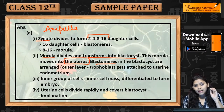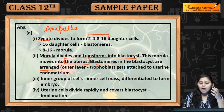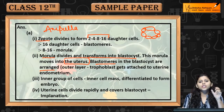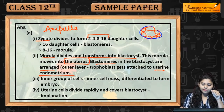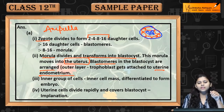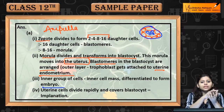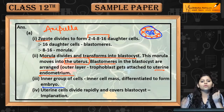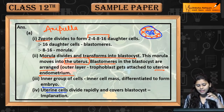Blastomeres present hote hain blastocyst mein. Outer layer is trophoblast, jo gets attached to the uterine ki endometrium lining se. Inner mass of cells woh differentiate hongi aur form karengi embryo. Outer layer trophoblast ke bahar endometrial lining hai, aur under embryo formation hogi. Uterine cells divide karengi rapidly.